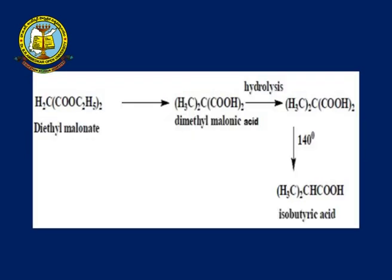For example, taking diethyl malonate with two alpha hydrogens replaced by two methyl groups gives dimethyl malonic ester. Upon hydrolysis, the ester groups are cleaved to give carboxylic acid functional groups. Then, upon heating at 140°C, one mole of the carboxylic acid group is eliminated as CO2, giving isobutyric acid as the product.